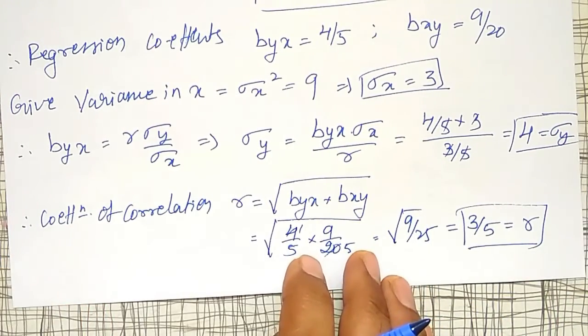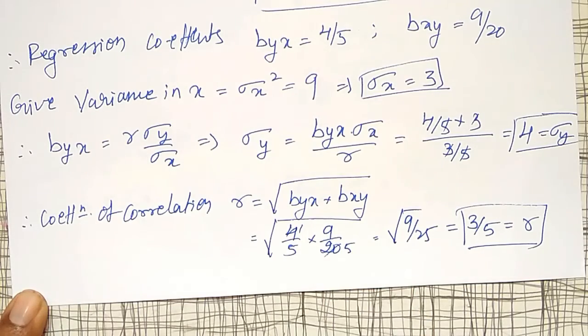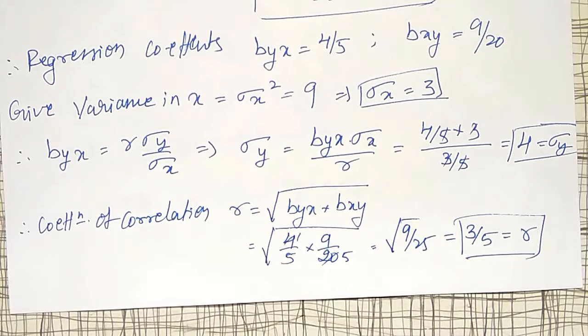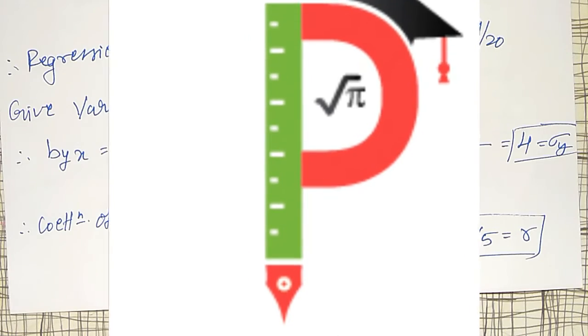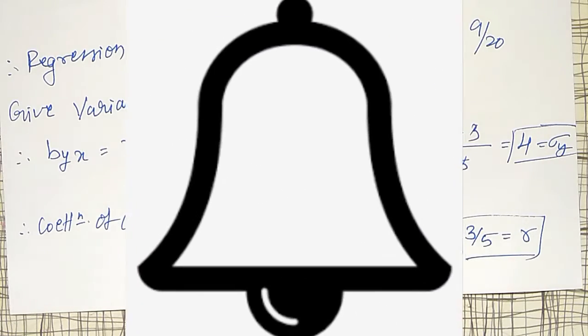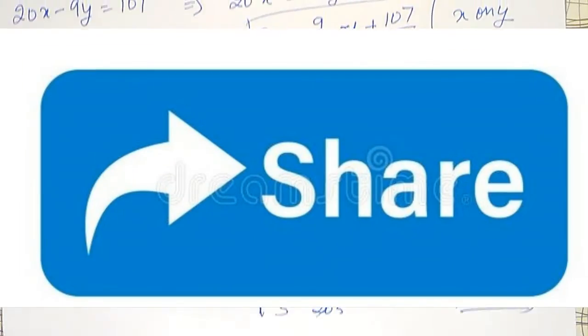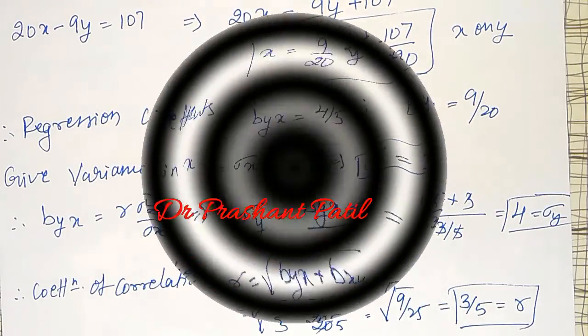Like that, one by one relations we should remember and then we can find out the remaining things. Like this, some more examples on regression lines I am going to solve in my next videos. If you not yet subscribe my channel, please subscribe my channel, don't forget to hit the bell icon so that you'll get the notifications of my next videos. Like this video, comment, and also share this video. Thank you friends.